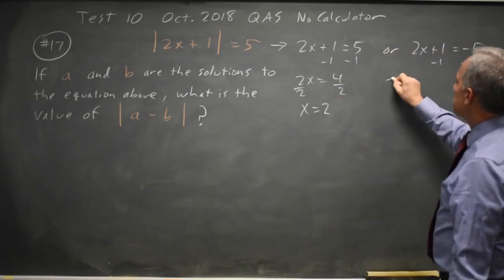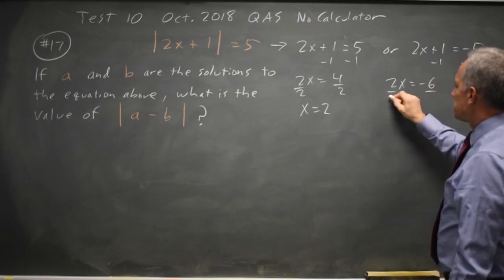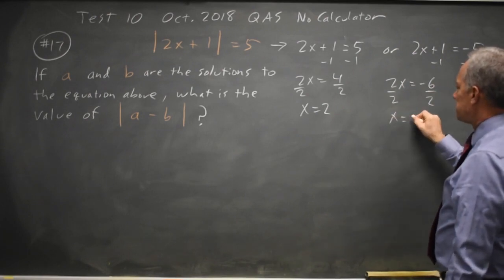Subtract 1 from both sides and you get 2x equals negative 6, divide both sides by 2 and you get x equals negative 3.